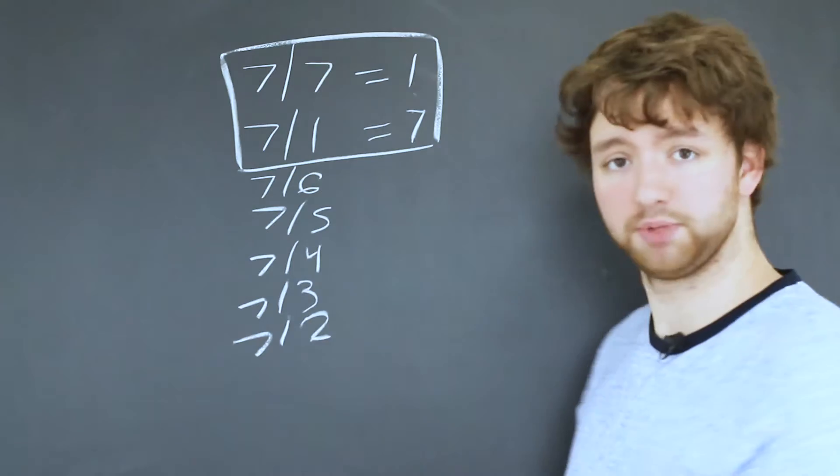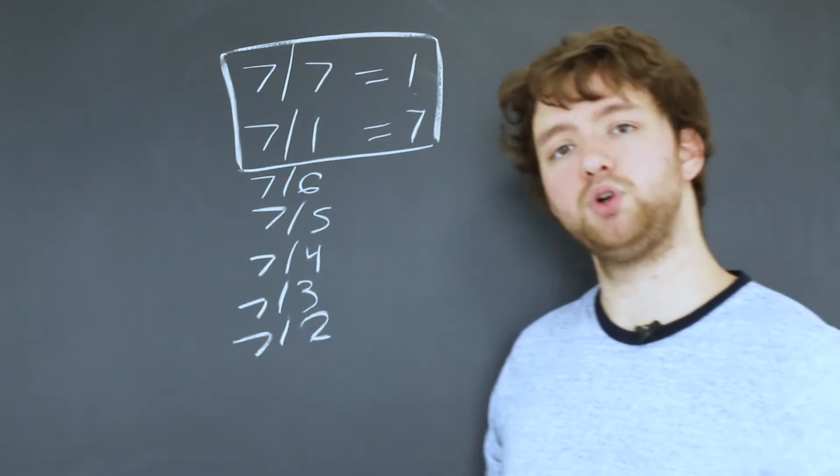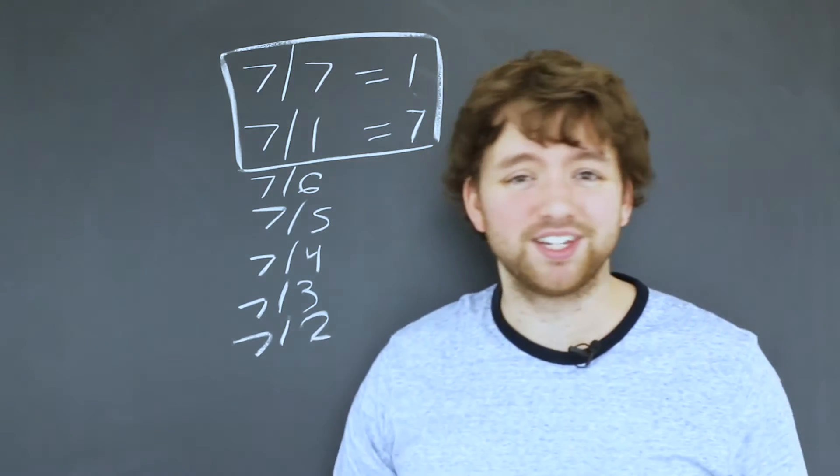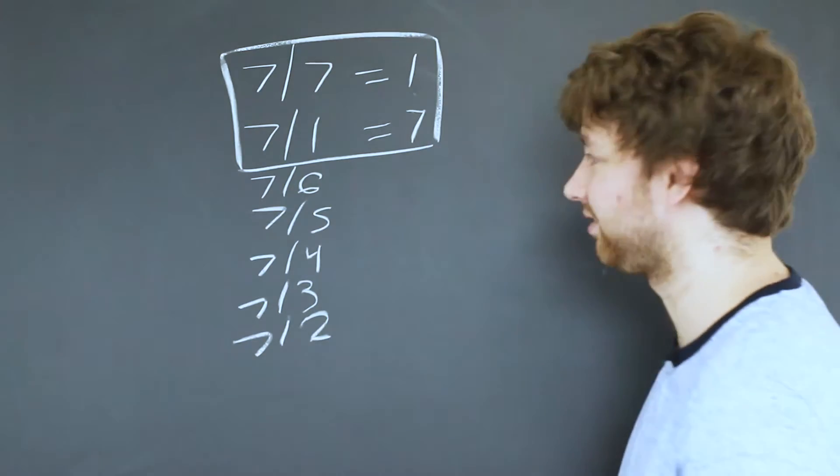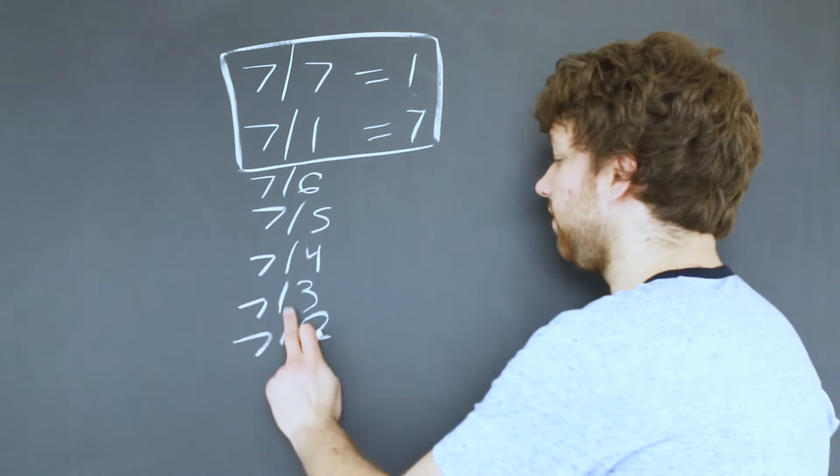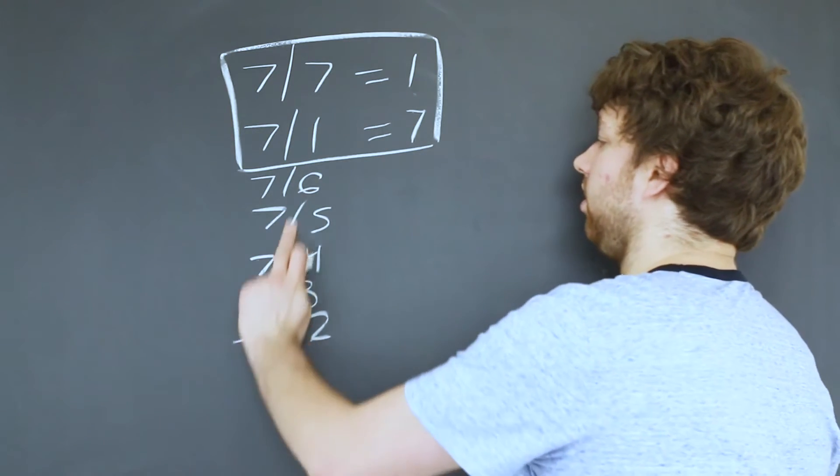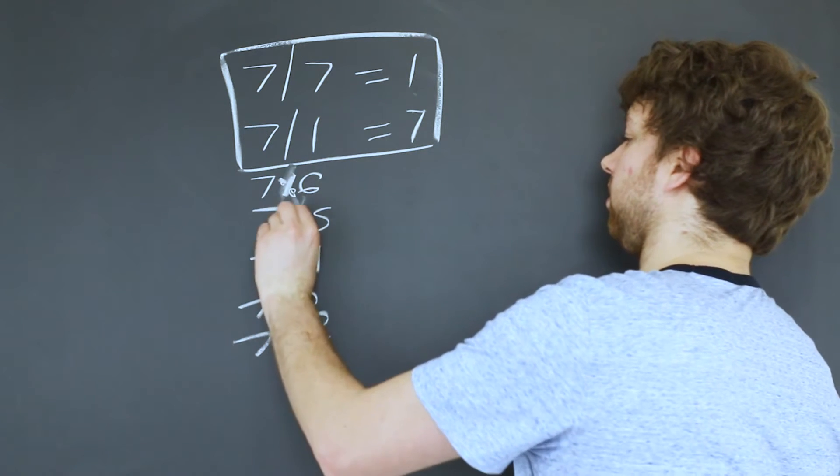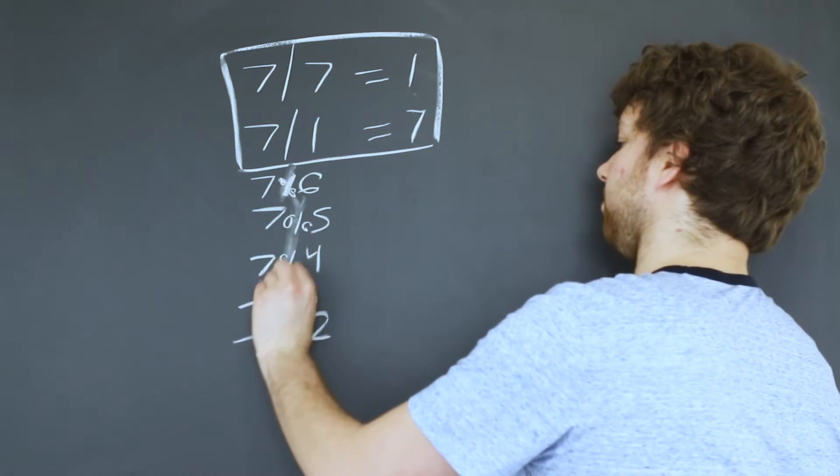If you have seven slices and seven people, everyone gets one slice. One person? That lucky person gets seven slices. So basically we can use the modulus operator. Instead of using division, the modulus operator is the percent sign that's going to give us the remainder.